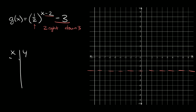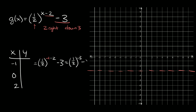We can just make a little xy table and plot a few points. I'm going to use negative one, zero, and positive two — because if you put two in the exponent, you get two minus two which is zero, so that'll be an easy exponent to evaluate. Starting with negative one: y is equal to one half raised to the negative one minus two, minus three, which is one half raised to the negative three, minus three. With a negative three exponent, flip your fraction and turn your exponent positive: that gives two over one raised to the positive three. Two over one is just two, so this is two cubed, which is eight, minus three, equal to five.